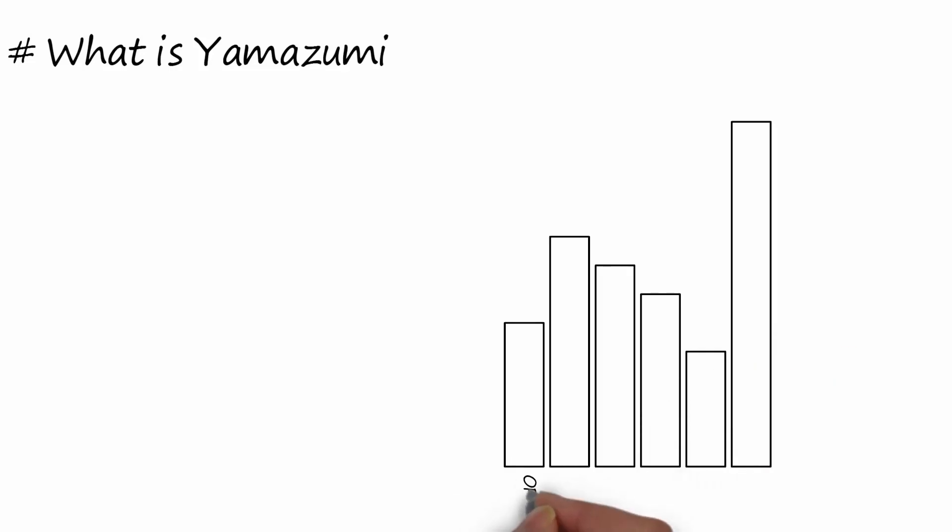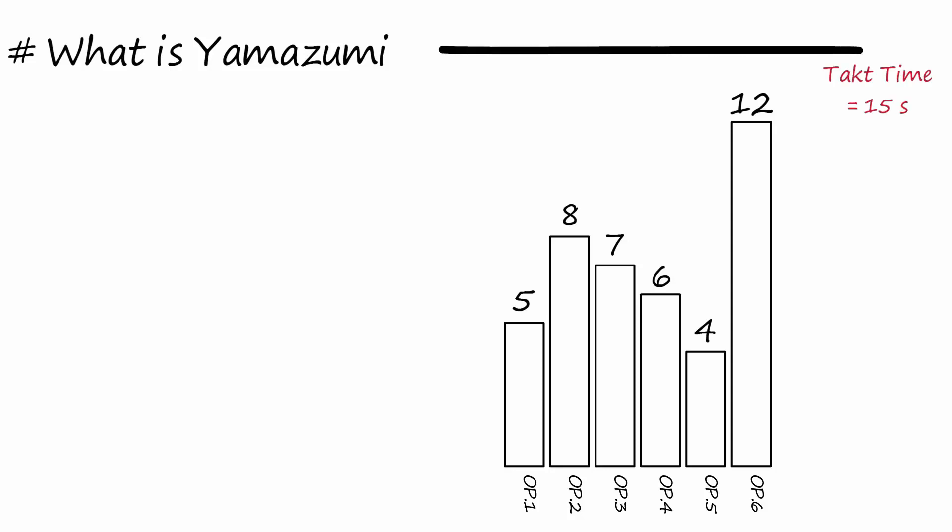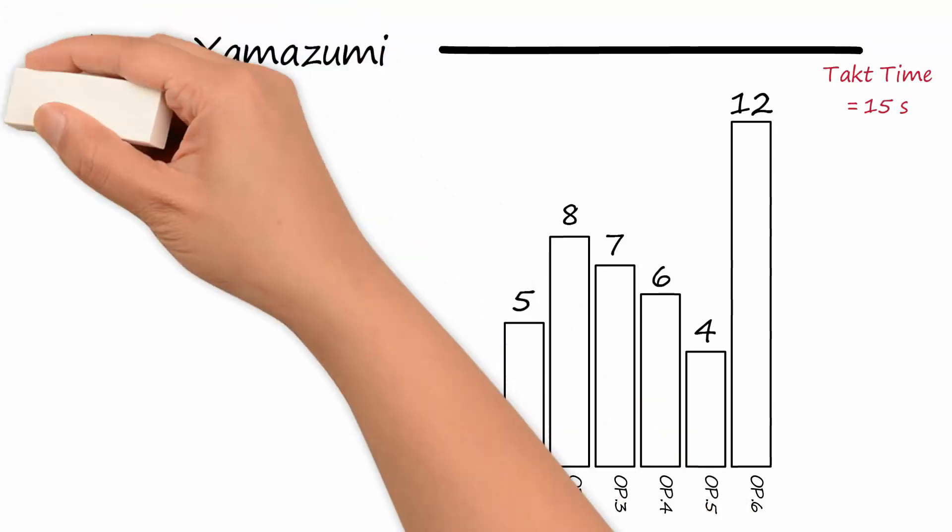What is Yamazumi? Imagine a process is done by six working stations, with work content described as in this graph. To improve and increase productivity, the first tool to use is Yamazumi.